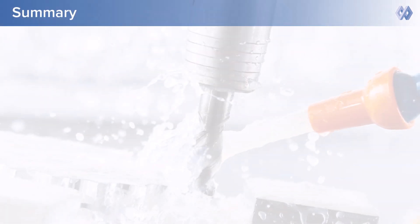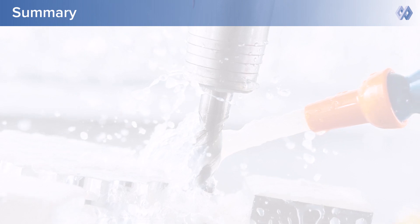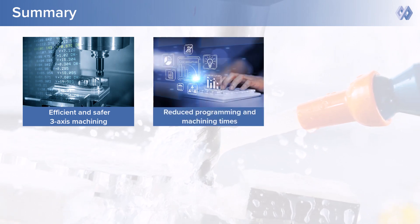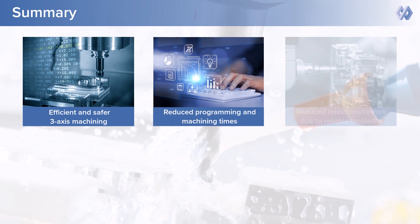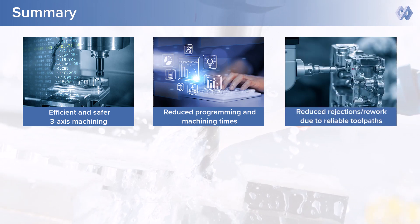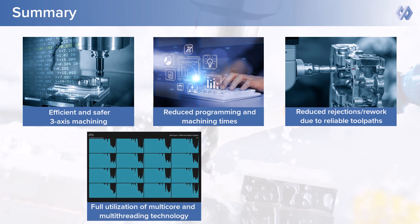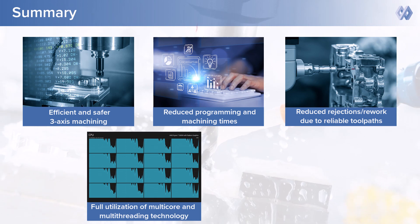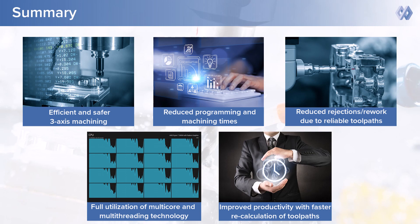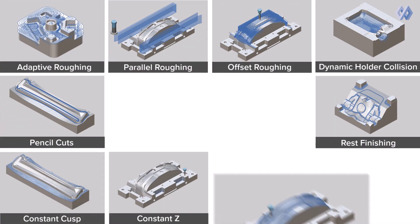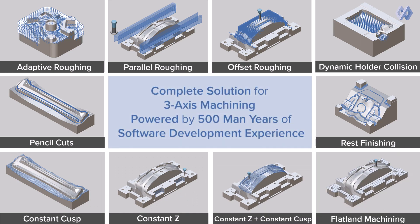ModuleWorks 3-axis machining solution offers major benefits such as: generation of efficient and safer 3-axis machining toolpaths, optimization of programming time, machining time and hence manufacturing cost, better control over rejections and rework and hence cost of poor quality, improved productivity through optimum utilization of the latest hardware capabilities for faster generation of complex toolpaths, and flexibility through faster regeneration of toolpaths after making changes. Using the 3-axis machining solution from ModuleWorks, you can generate efficient and safer toolpaths faster, to optimize machining cycle time, reduce manufacturing cost, and improve product quality.